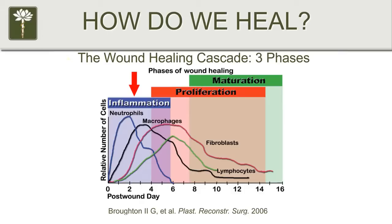These lines basically show the different types of cells that are involved in healing. You start with the inflammation. Then the second phase is proliferation — where the scaffold is set up for the actual healing of the tissue to occur. The actual healing of the tissue is maturation, where the collagen fibers cross-link and strengthen and everything packs down.